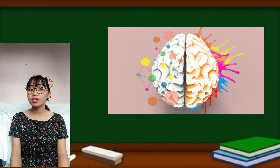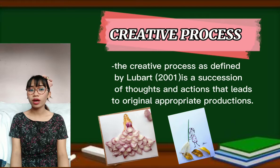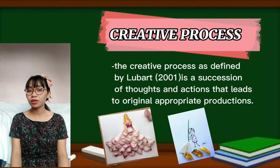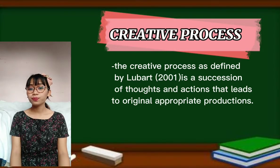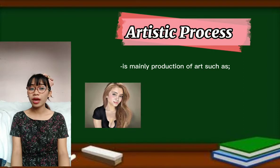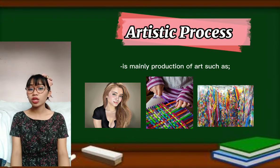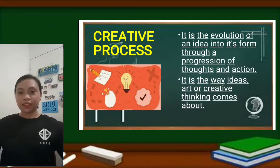According to Botelia Sinazne-Lobart in 2018, the creative process, as defined by Lobart in 2001, is a succession of thoughts and actions that leads to original appropriate productions — the key concept being original ideas that the student came up with on their own. The artistic process, on the other hand, is mainly the production of art such as painting by copying from a photograph, weaving by following a pattern, or creating a thousand paper cranes — involving craftsmanship and skills, but not the creation of new ideas.